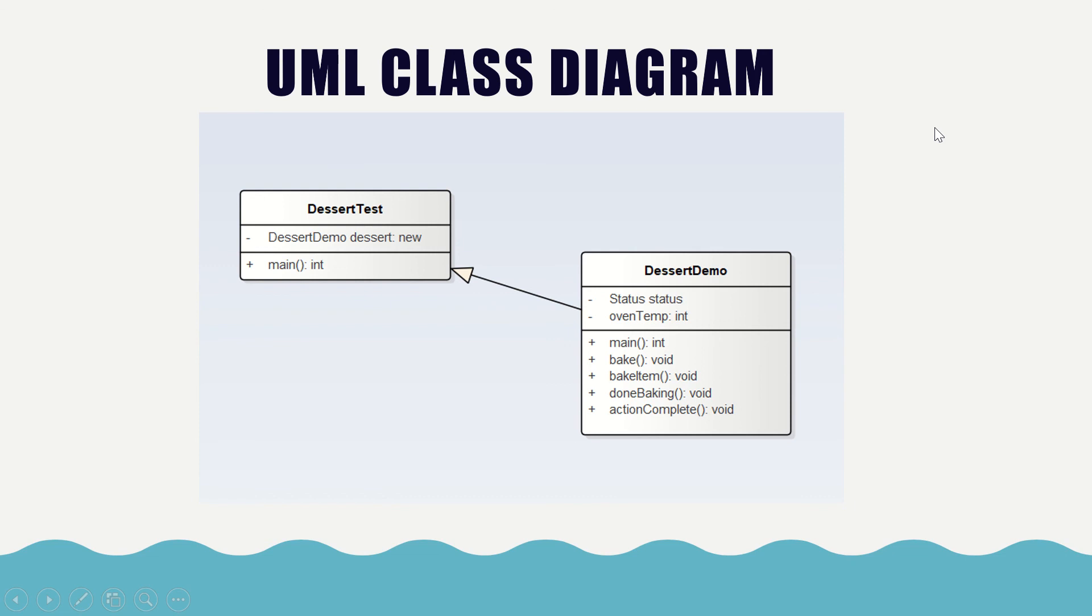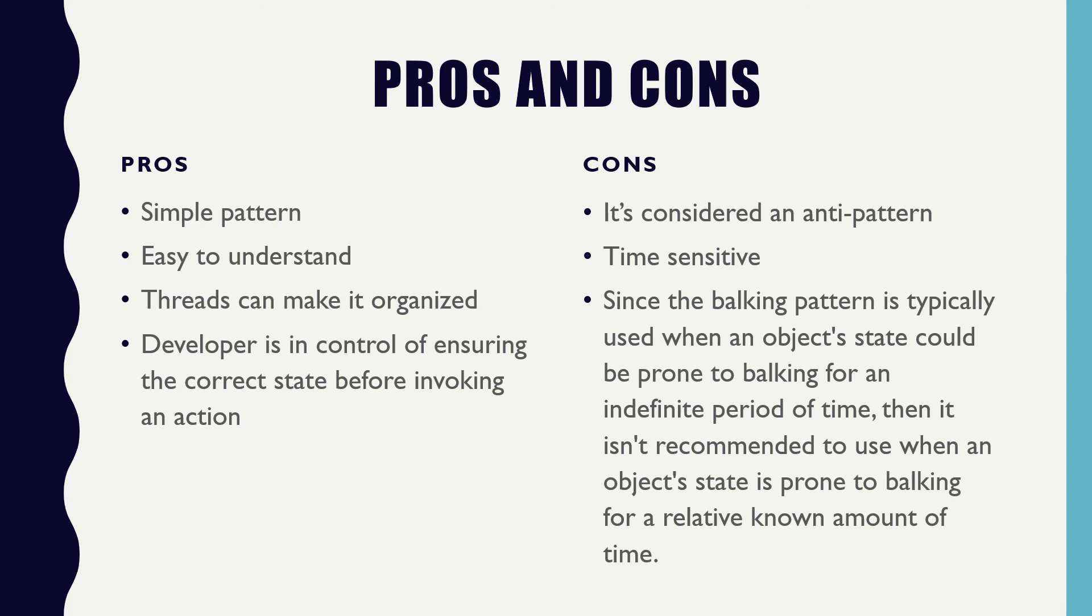The pros and cons. It is a simple pattern and it's easy to understand. Threads make it super organized and the developer is in control of ensuring the correct state before invoking the action. It's also less runtime checking for trying to compensate or recover. So basically, if you're in the wrong state, then simply don't do it.